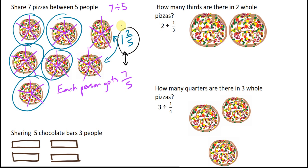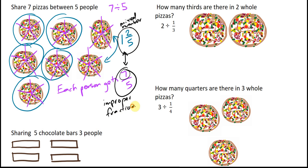This here is called a mixed number — it contains a whole number part and a fractional part. And then this is called an improper fraction, whereby the numerator is larger than the denominator. If we go back and look at 7 divided by 5, another way of writing that is 7 over 5, or 7 fifths. That division bar is the same as dividing.